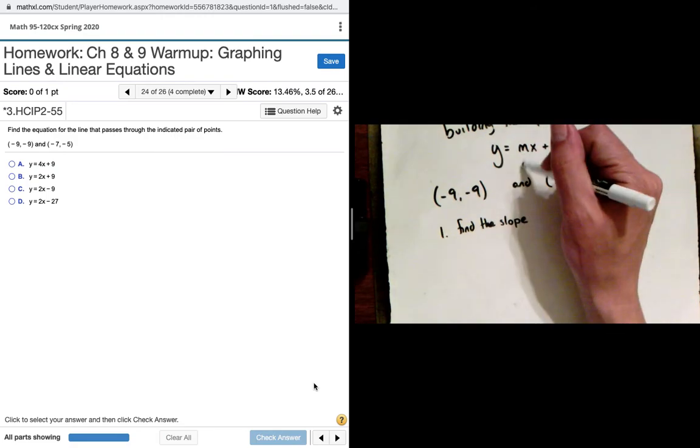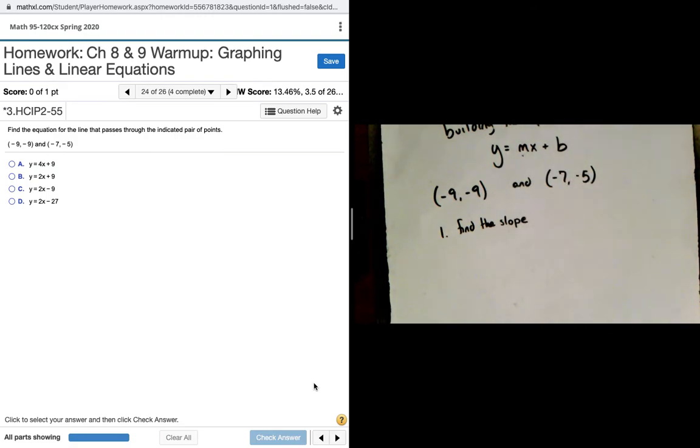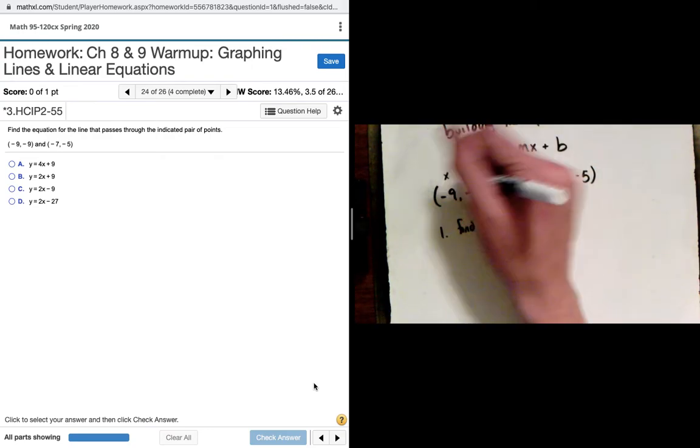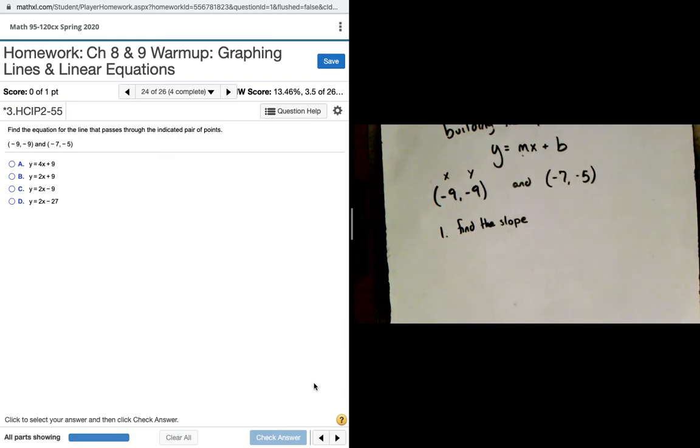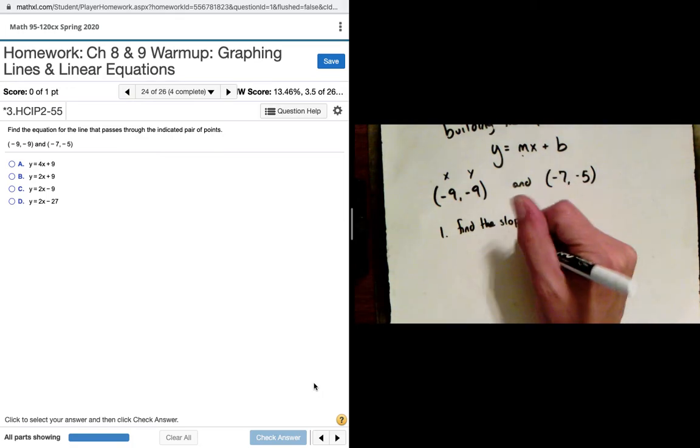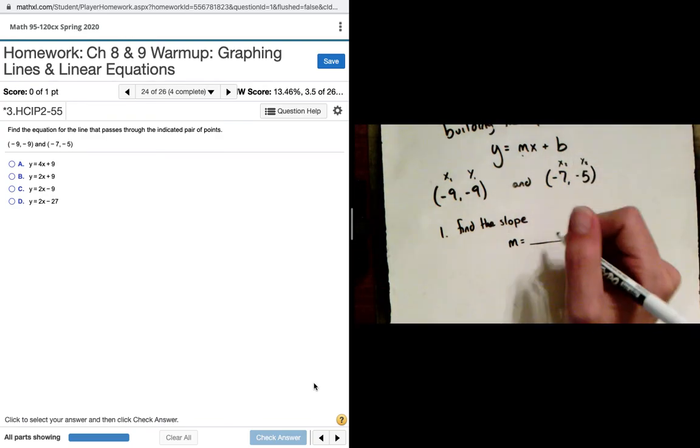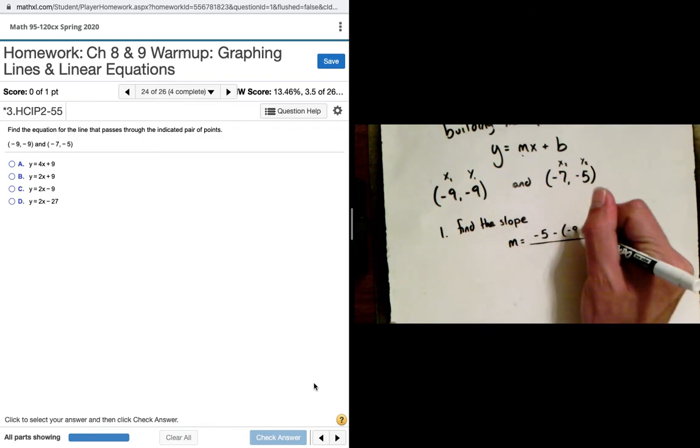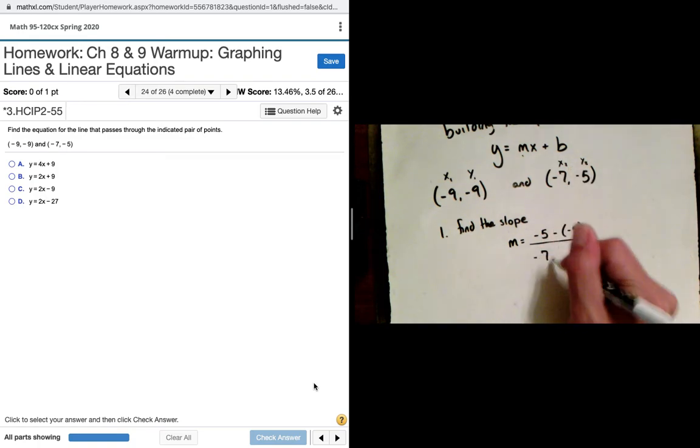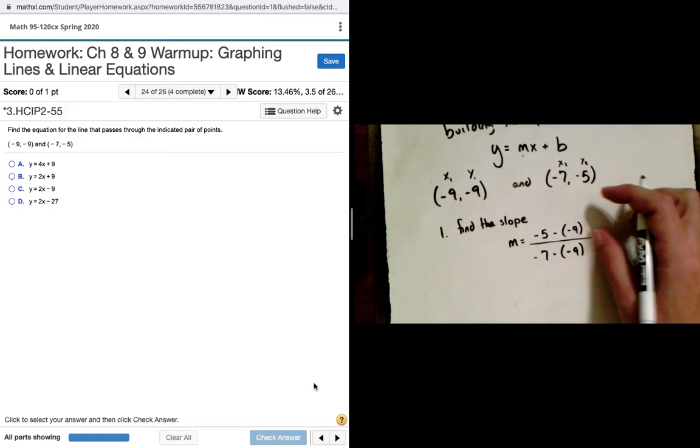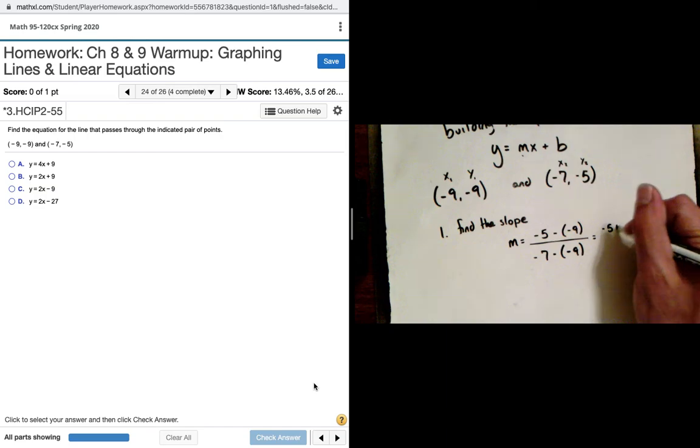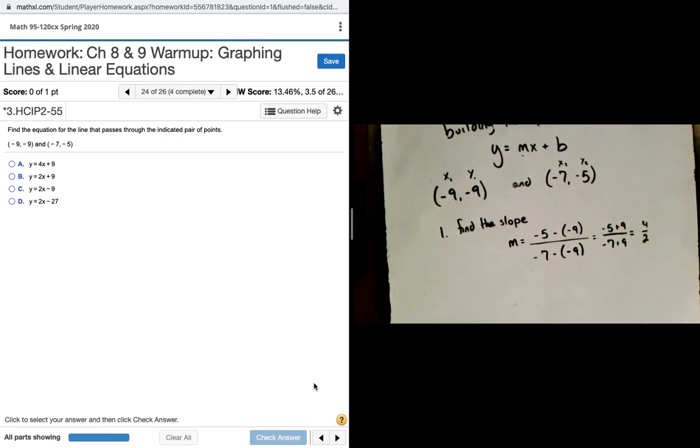Once we find that slope, we can place it in the role of M. Then, we're going to choose one of these points as X and Y to find our Y-intercept. So, we'll start with finding the slope. Remember, the slope is represented by the M value. Here's my X1 and my Y1. Here's my X2 and my Y2. So, slope is going to be negative 5 minus negative 9 over negative 7 minus negative 9. That is negative 5 plus 9 over negative 7 plus 9, which is 4 over 2. We can simplify that even farther to just 2. So, in this problem, our slope is 2.